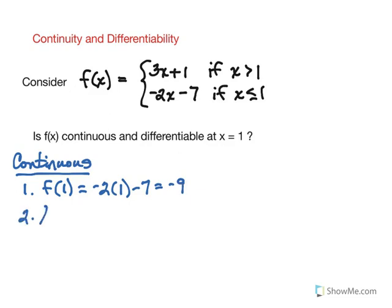Second step is that we need to verify the limit exists as we approach one. Because it's a piecewise function we are going to have to consider both the left and right limits. So let's do the left side first.